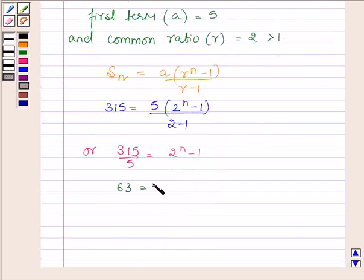Or we have 63 = 2^n - 1, so 2^n = 64, which can be written as 2^6. So on comparing, we find that n = 6.